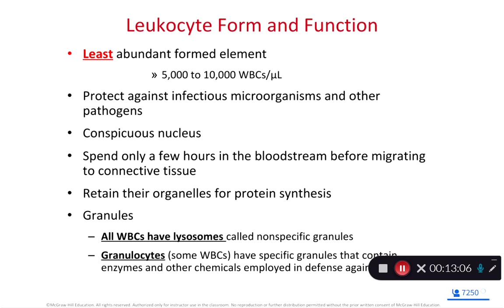Because leukocytes have a nucleus, they have organelles that use the genetic code — ribosomes, mitochondria, and particularly lysosomes. White blood cells have a ton of lysosomes, which are the recycling center of the cell. When white blood cells phagocytize pathogens, they use lysosomes to destroy the pathogen intracellularly rather than letting it just hang out inside the cell.